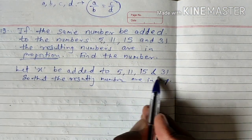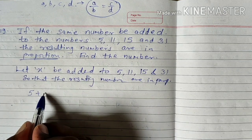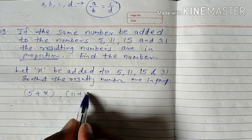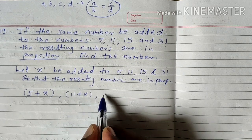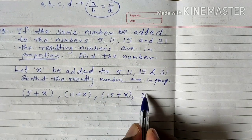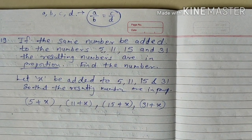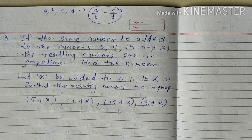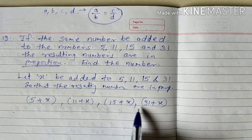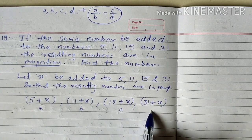If X is added to all these numbers, then they become 5 plus X, 11 plus X, 15 plus X, and 31 plus X. These are the new numbers after addition of X to every number. After this addition, these numbers are in proportion.